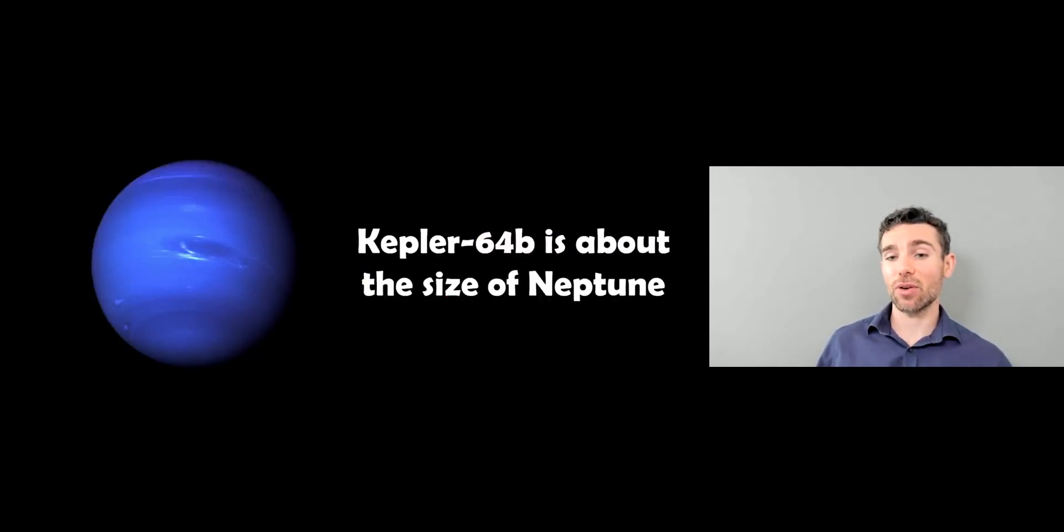Now, the planet itself, Kepler-64b, is about the size of Neptune. So it's a fairly large planet. It's not Earth-like. So it's going to be kind of like a gas giant. It's a reasonable size. So you're not really going to expect to find life on that because of its size, really.